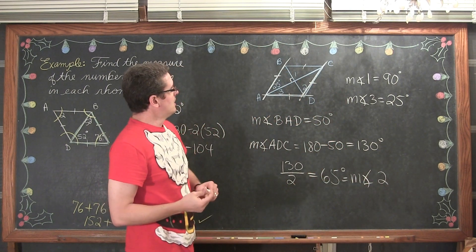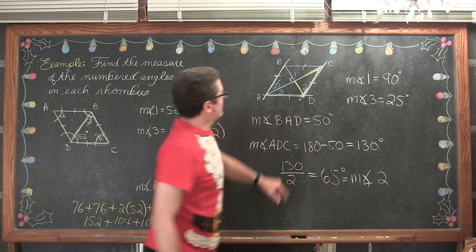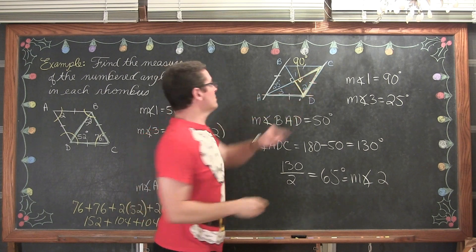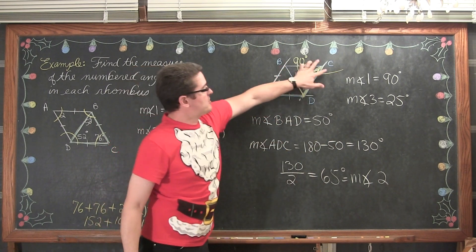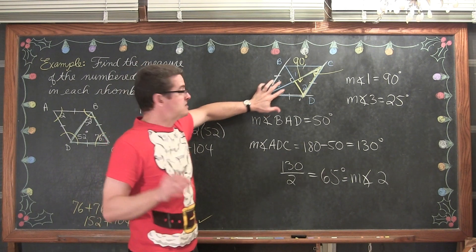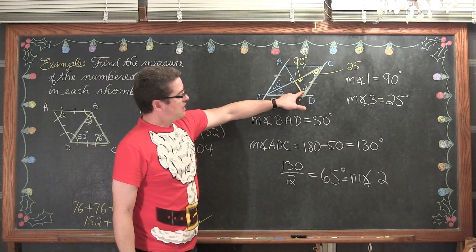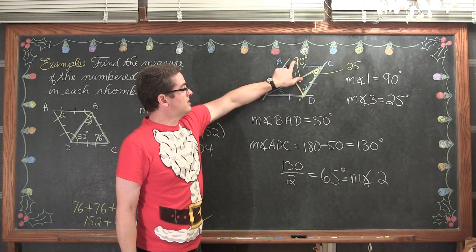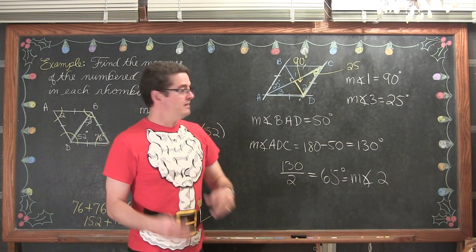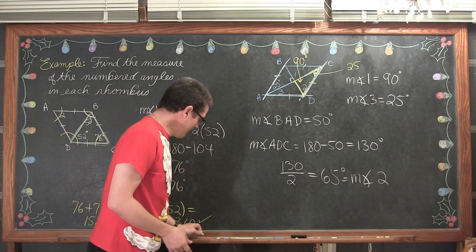There is another way to figure out angle 2. Looking at the yellow triangle, we have a 90-degree angle. The opposite angles of a parallelogram are equal and the diagonals bisect them, so we had 25 and 25 up here as well. Inside this triangle: 180 minus 90 is 90, take away 25 is 65, take away another 5 - no wait, 180 minus 90 minus 25 gives us 65 degrees. The measure of angle 2 is 65 degrees.